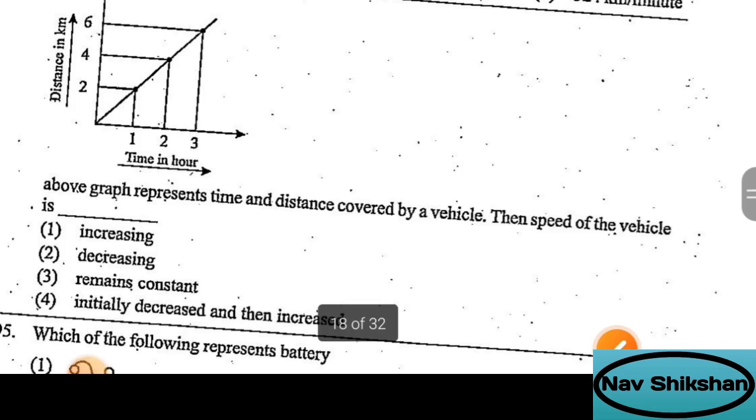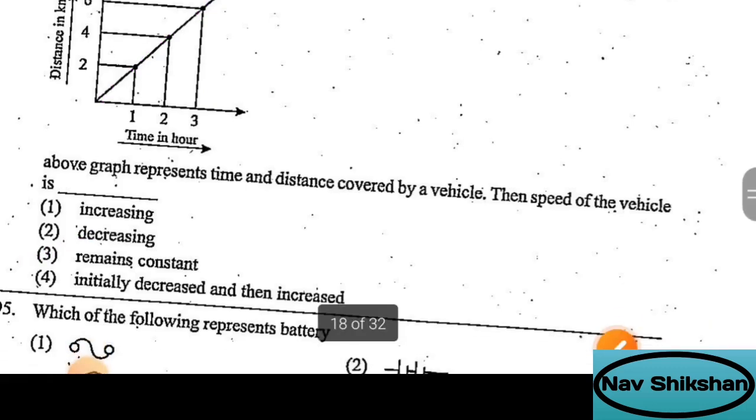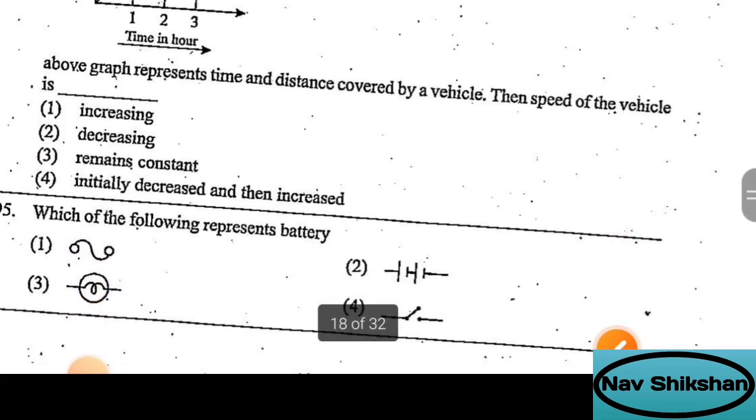In this chart, the graph represents time and distance covered by a vehicle. The speed of the vehicle is - here you can see when it is a straight line, it always depicts a constant motion. So here option number 3 is correct, meaning for every unit of time it covers the same distance.